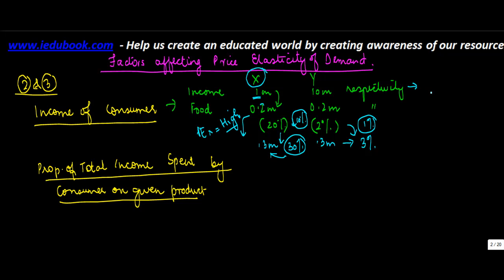Whereas for Y, if the income is more which is 10 million, he may not be very bothered. So even if the price increases, he would still go ahead and buy this thing. So his demand is unaffected by price and therefore is said demand is price inelastic.